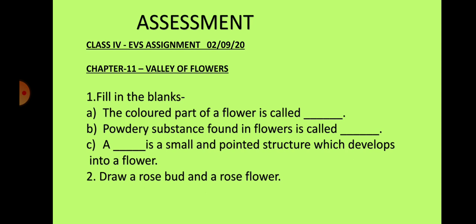Today, write down the answers to these questions. Question 1, fill in the blanks. Part A: The coloured part of a flower is called blank. Part B: The powdery substance found in flowers is called blank. Part C: A blank is a small and pointed structure which develops into a flower.